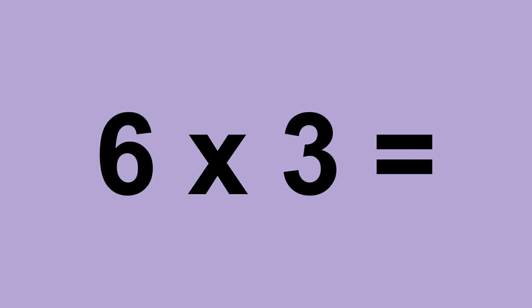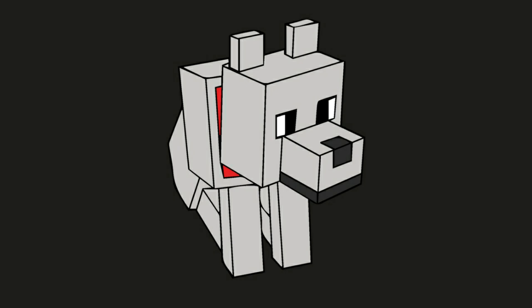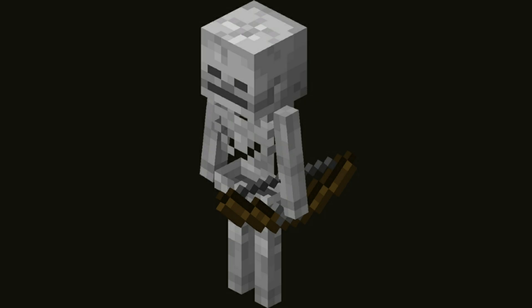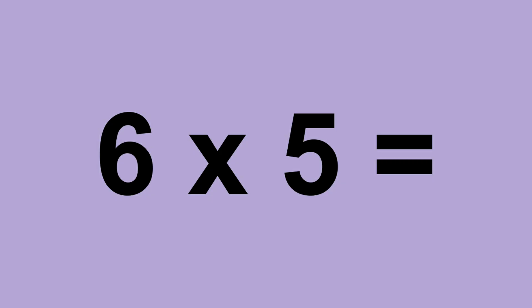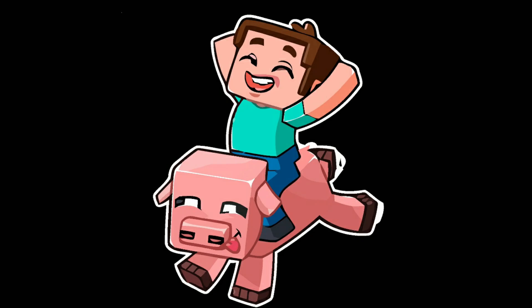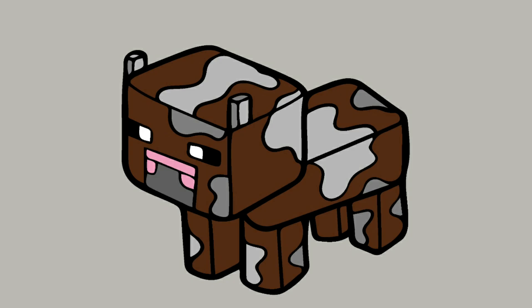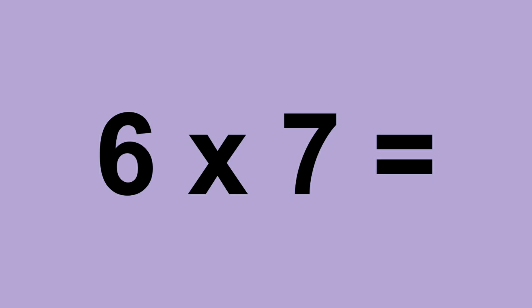6 times 3 equals 18. 6 times 4 equals 24. 6 times 5 equals 30. 6 times 6 equals 36. 6 times 7 equals 42.